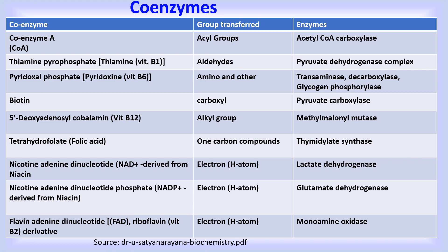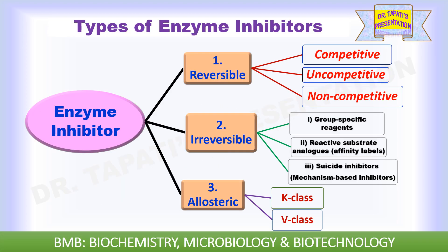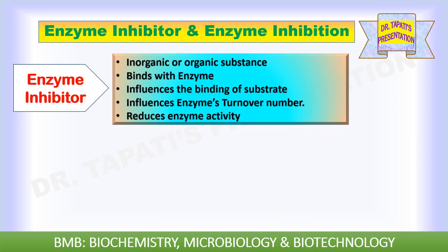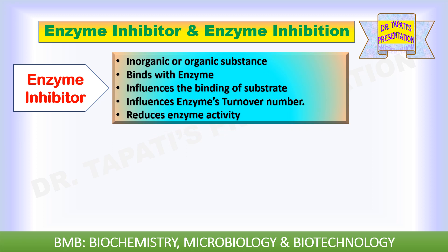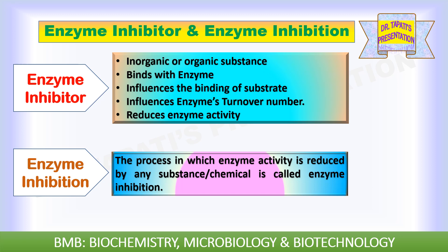Enzyme activity is also affected by inhibitors. Enzyme regulation is a careful control system in which some enzymes are turned on while others are turned off. Enzymes need to be tightly regulated to ensure that levels of product do not rise to undesired levels — this is accomplished by enzyme inhibition. Enzyme activities are inhibited in reversible, irreversible, and allosteric manners. An enzyme inhibitor is an inorganic or organic substance which binds with the enzyme, influences the binding of substrate, influences the enzyme's turnover number, and reduces enzyme activity. The process by which enzyme activity is reduced by any substance or chemical is known as enzyme inhibition.